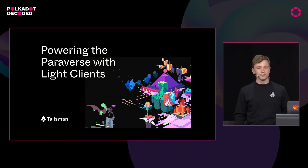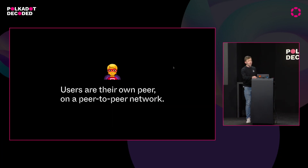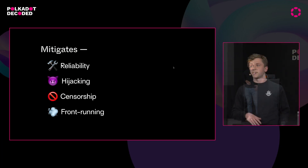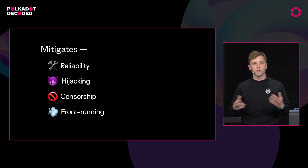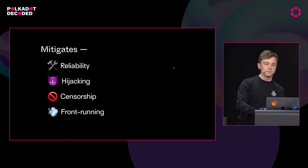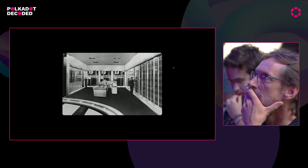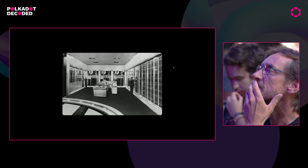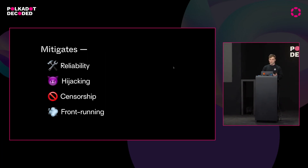In this hall, in front of you all, I was a peer on the Polkadot relay chain — a peer on a peer-to-peer network — and I did it with the questionable conference internet. This is really powerful for a few reasons. Pierre from Parity explained some of these yesterday, but you mitigate a lot of the risks presented by having an RPC as your access point to the blockchain: things like reliability where servers go down, hijacking, censorship, front-running. These are all mitigated by running Lite clients in the browser, like we've seen today.